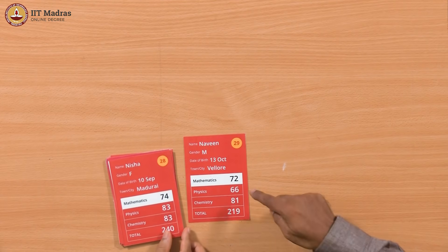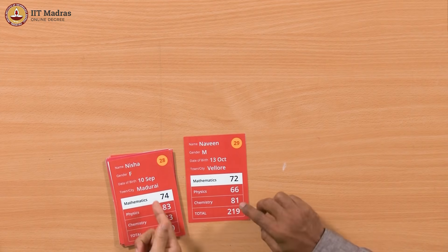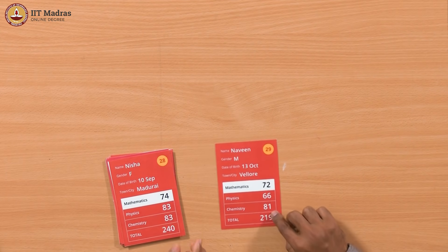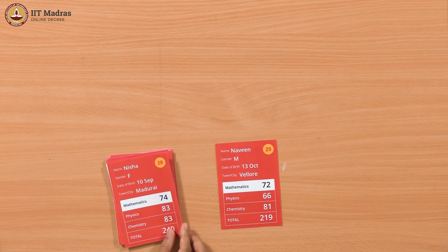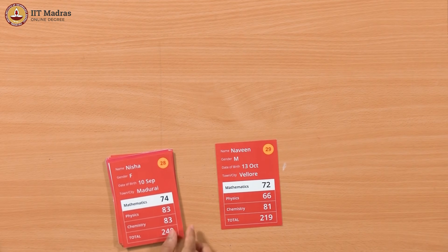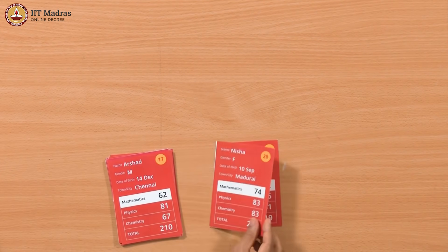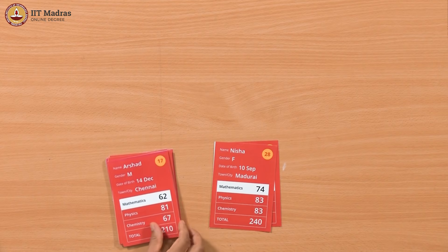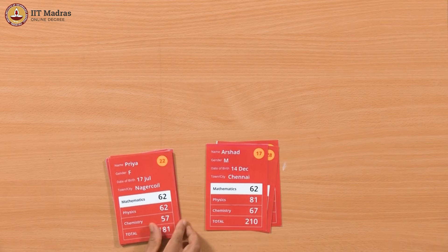We look at the first card. As usual we will go through all the cards systematically, one by one. Maths is not greater than 90, so we do not even need to look at this. If any of them is below 90 we can skip. This one is 74, so we skip. 62, so we skip.